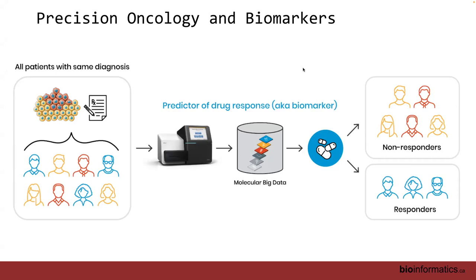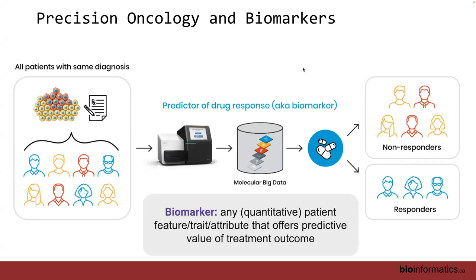Based on that molecular information, the hope is that if you have good biomarkers — good predictors of drug response — you can predict whether a patient is going to respond favorably to a drug, and then choose which drugs to use or which trials that patient should be assigned to. A biomarker can be anything you can measure quantitatively in the patient: age, gene expression, or a mutation. With molecular big data, we take many measurements, so biomarkers don't need to be a single feature.